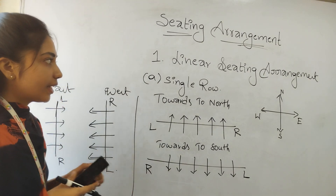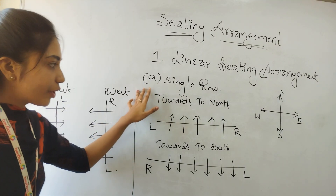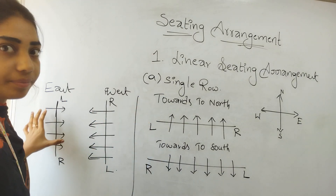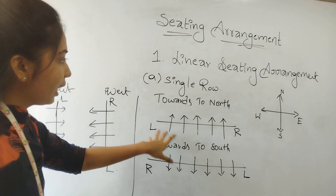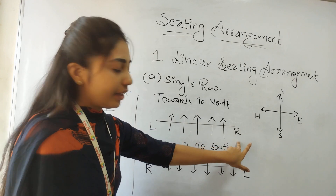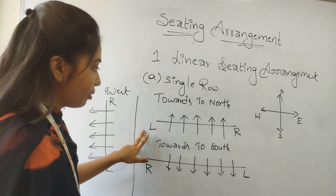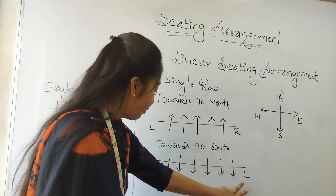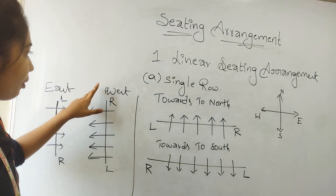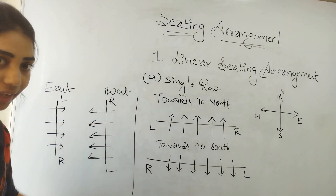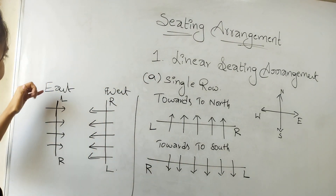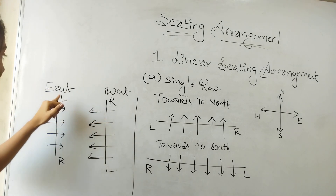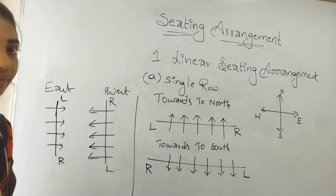So, if we have single row arrangements, we have two ideas on directions. For example, North side — this is the right side and this is the left side. South direction — this is the left side and this is the right. West — right is this side and left is this side. East — left is this side and right is this side.